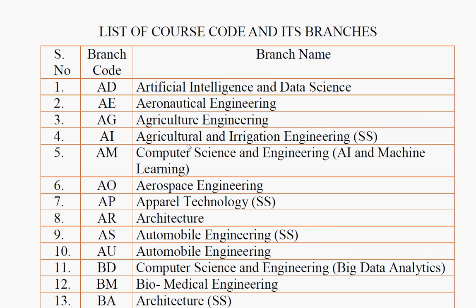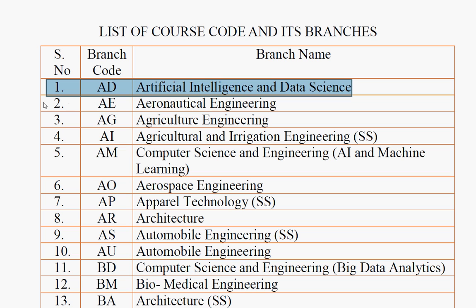So first of all, what are the courses available? Later, in the colleges, you will be able to collect information, and the choice filling will be easy. First: Artificial Intelligence and Data Science — this is a recent years course. The branch code is AD.